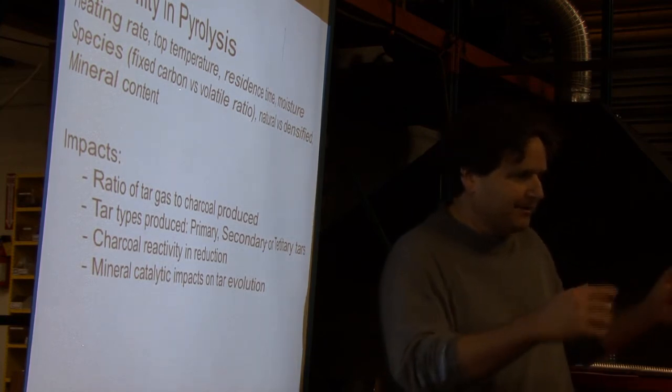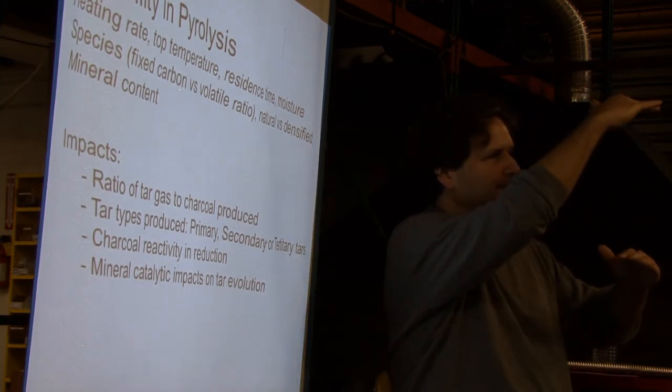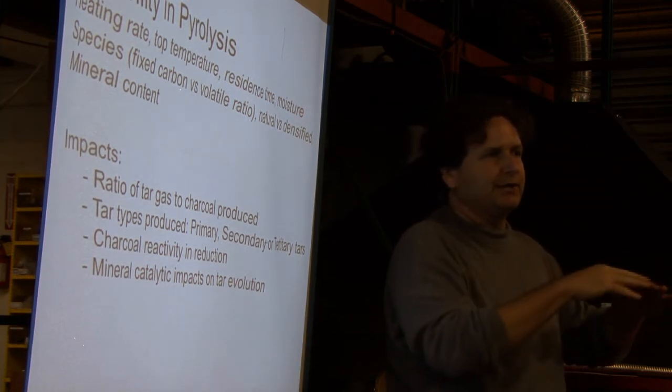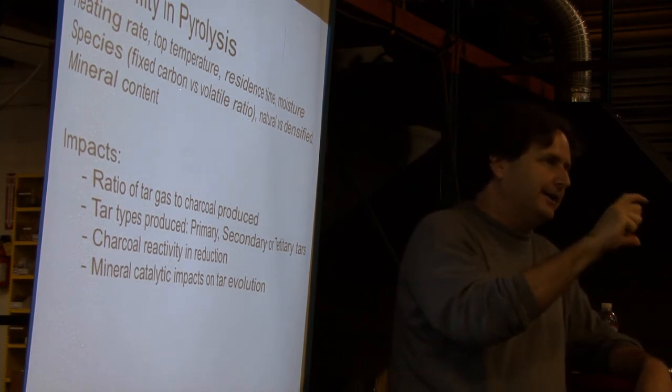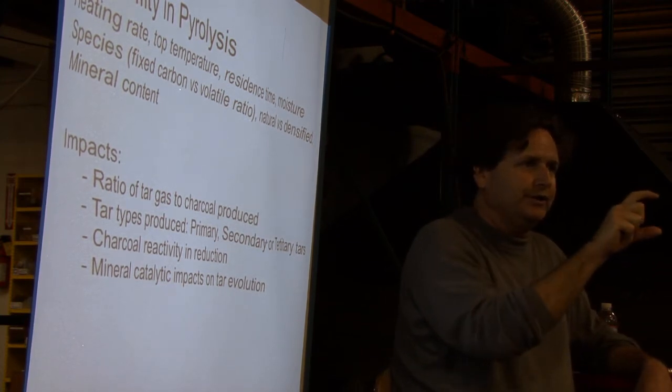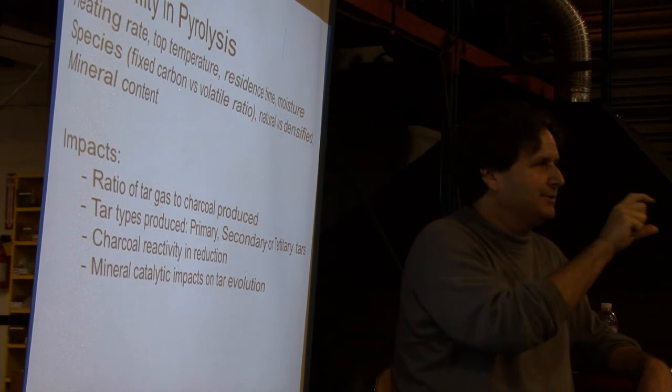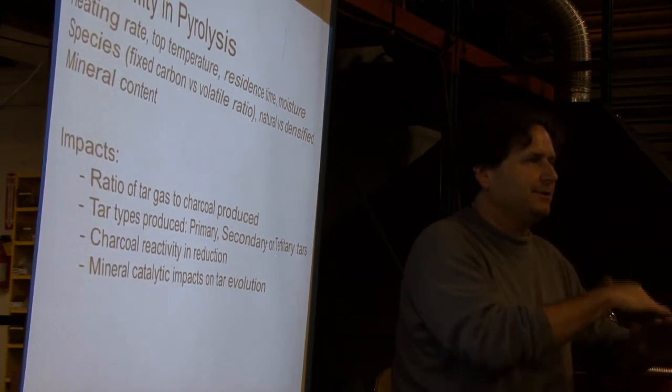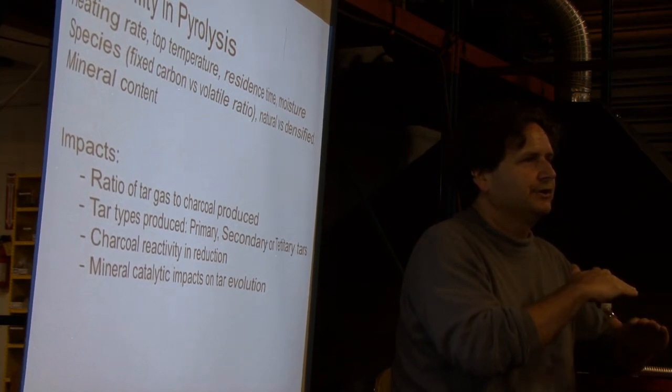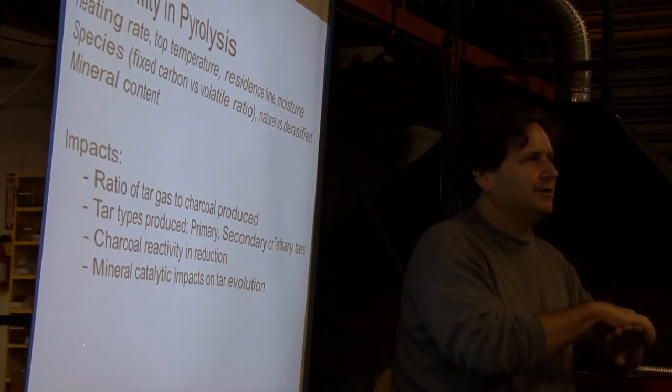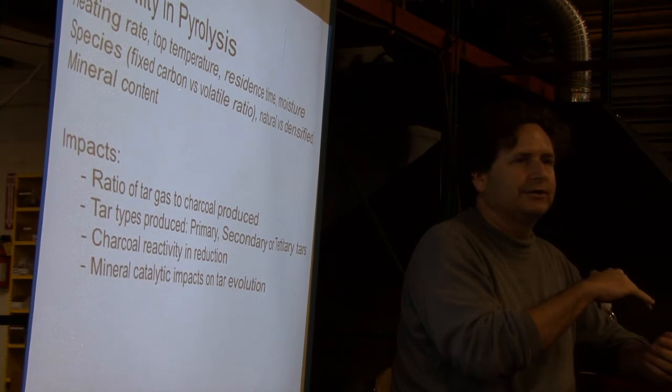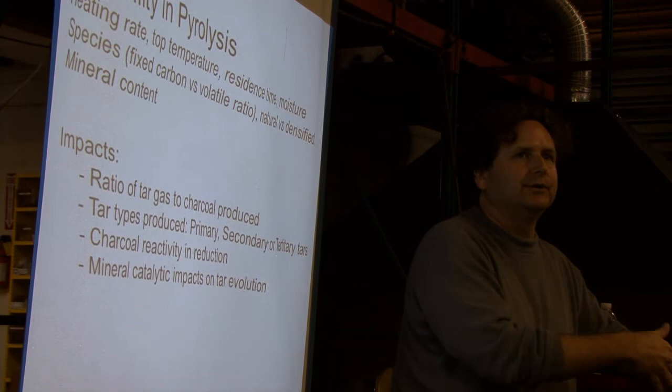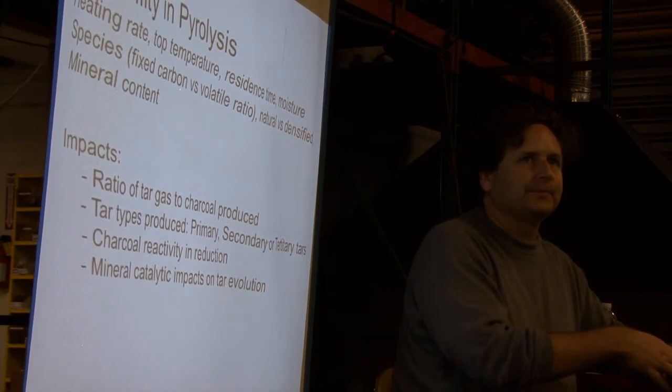So in a regular downdraft gasifier, remember the pyrolysis is happening passively on top of the combustion zone. If you go and characterize that, you find out it happens in about a two-inch band there. It happens ultimately at a very high temperature at a very short period of time. It happens almost at combustion temperatures. So the natural state of a downdraft gasifier is optimized to create these tertiary tars. It creates the worst type of tars to then deal with later in the system.